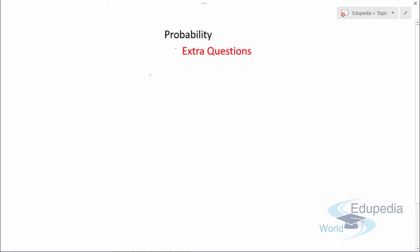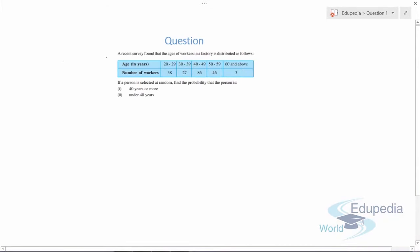Welcome to Edupedia World. In this video we'll discuss some extra questions which are very important from the exam point of view and to clear the concepts. Let's discuss the first question. The question says that a recent survey found that the ages of workers in a factory are distributed as follows. If a person is selected at random, we need to find the probability that the person is 40 years or more (Part 1) and under 40 years (Part 2).